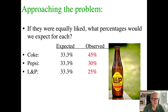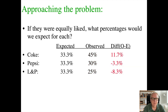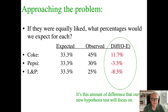The expected frequencies are 33.3, 33.3, and 33.3. But what I actually observed was 45, 30, and 25. To understand whether the drinks are being significantly preferred differently, I make a new column for the differences between observed and expected. Coke is actually liked 11.7% more than expected. Pepsi is minus 3.3% less than expected, and L&P is minus 8.3%. Those are our O minus E differences — this is what the new hypothesis test will focus on.